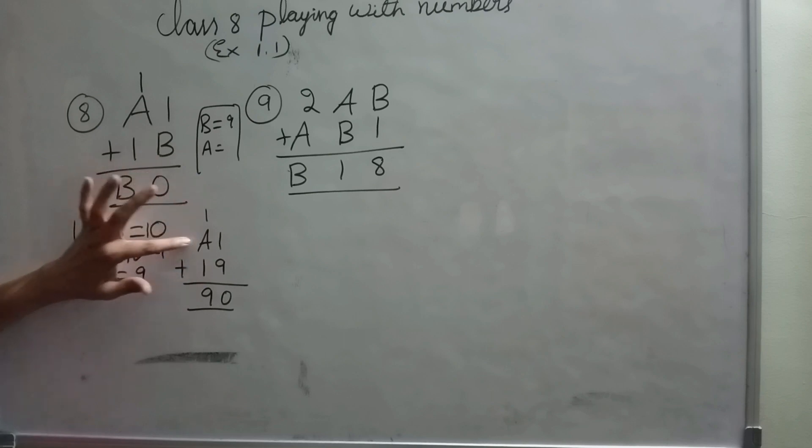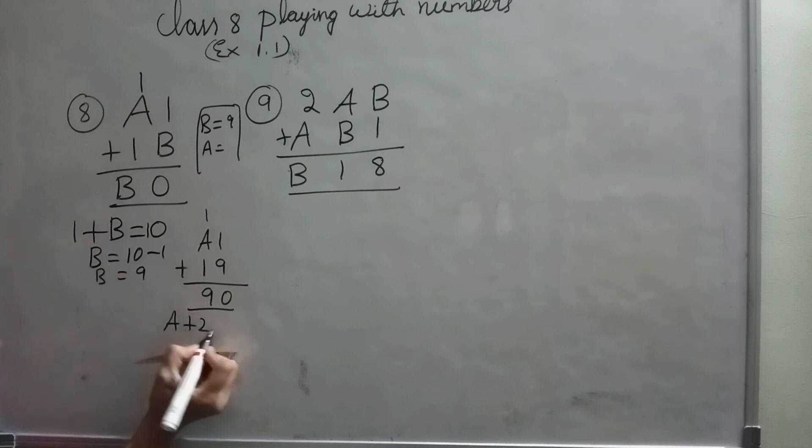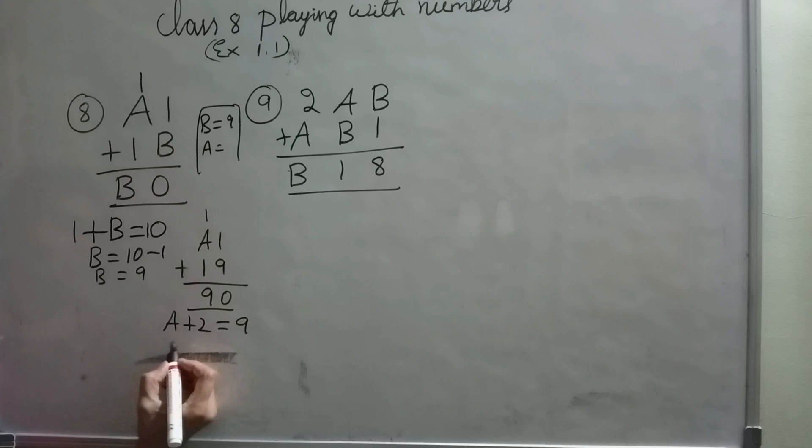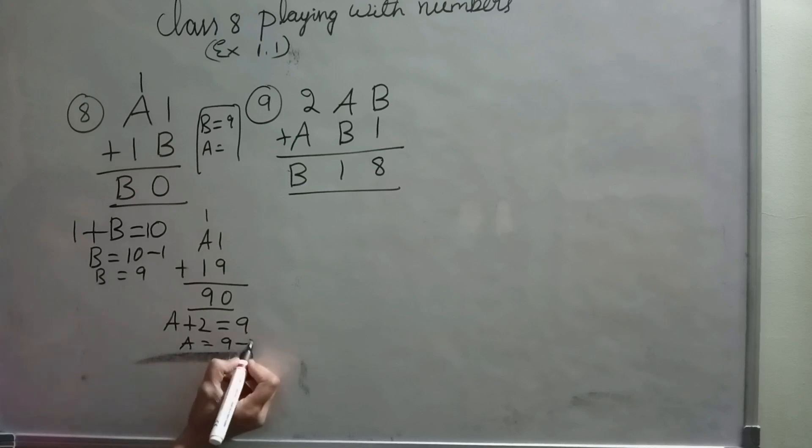What number should I add here to get 9 as answer? That means A plus 2 equals 9. A equals 9 minus 2. A equals 7.